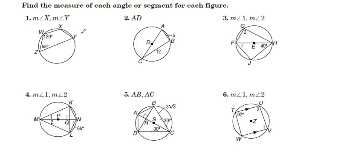Hello everybody. In these examples 1 through 6, we're going to find the measure of angles or segments for each figure. For number 1, it's an inscribed quadrilateral, and opposite angles of quadrilaterals inscribed in circles are supplementary. So supplementary to 55 is 125, that's angle X. Supplementary to 120 is 60, that's angle Y.